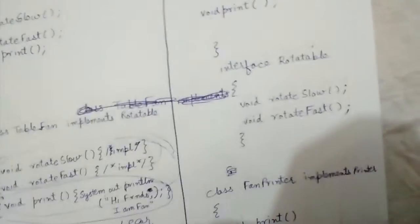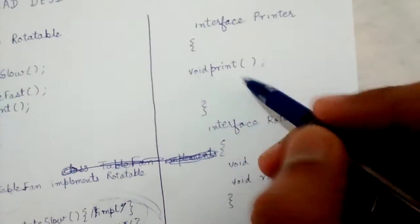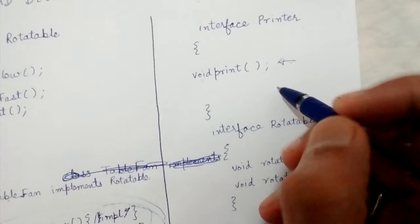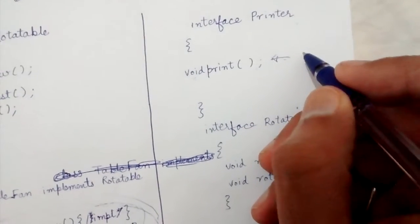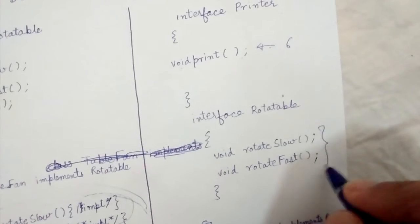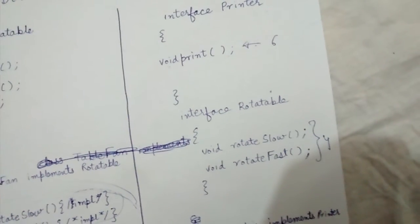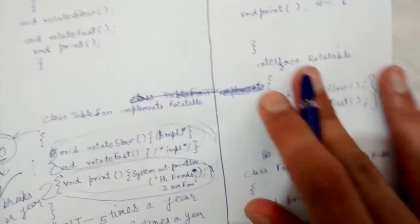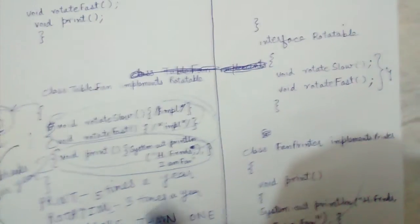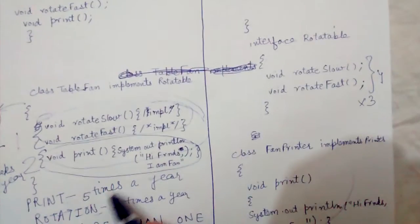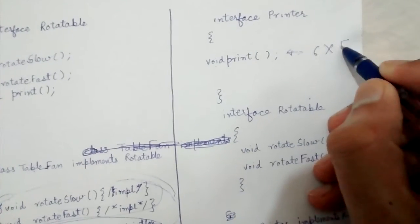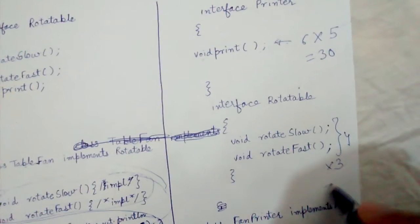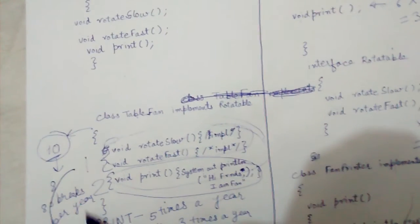So now those ten classes which were dependent are dependent either on the rotation methods or the print method. Let's say six of them were dependent on the print method and four of them on the rotation mechanism. We already said that rotation mechanism changes three times a year, so four into three — and the printing mechanism changes five times a year, so six into five. That gives us 12 plus 30, which equals only 42 changes a year, as compared to 80.